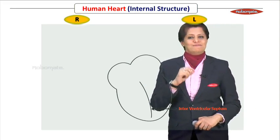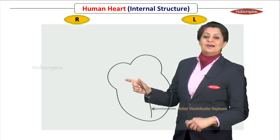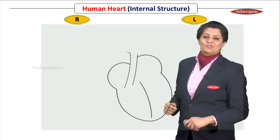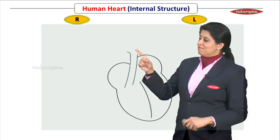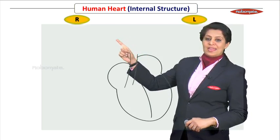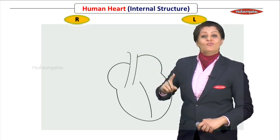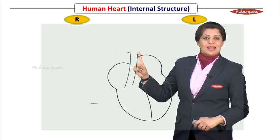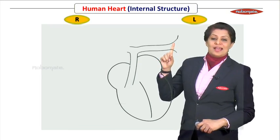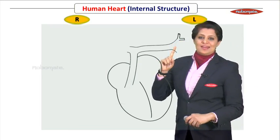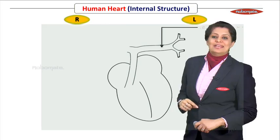Next, draw a beautiful blood vessel arising from the right ventricle, which is the pulmonary trunk. This trunk is dividing into right and left branches. At this stage, draw only the left side of the pulmonary trunk, branching it beautifully here. This is the left pulmonary artery.